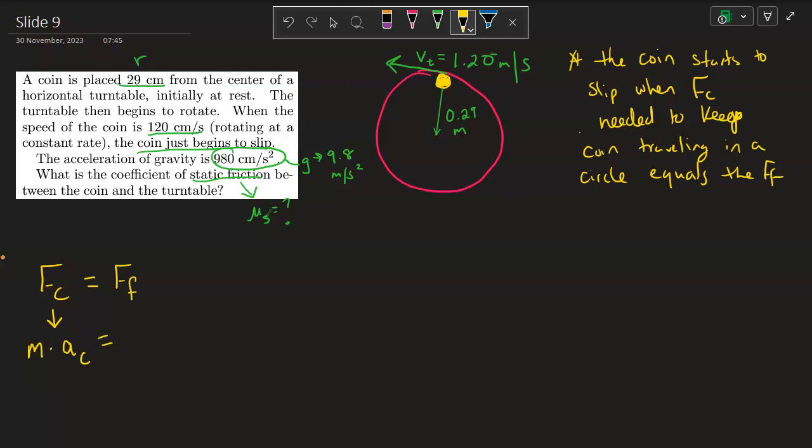And we set that equal to the equation for the force of friction. This is static friction, mu sub s times m times g.